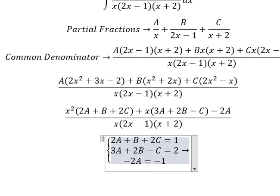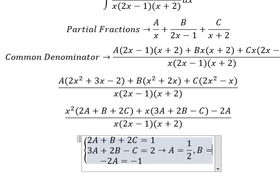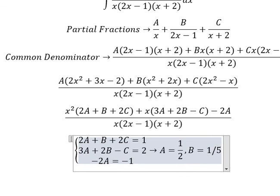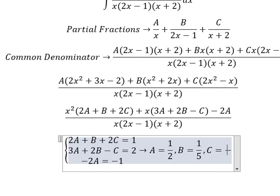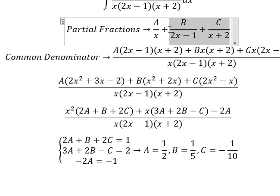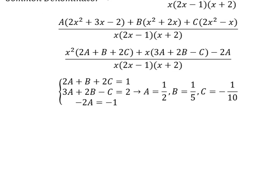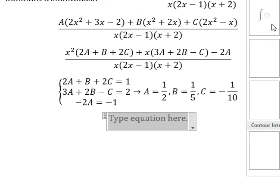Now we need to find the solution for A, B, and C. So we have A equals 1 over 2, B equals 1 over 5, C equals negative 1 over 10. Now we put the values of A, B, C in here, so we have the integral.